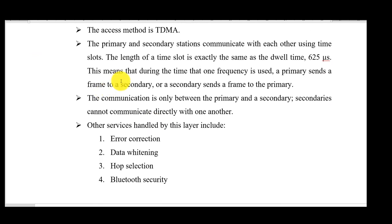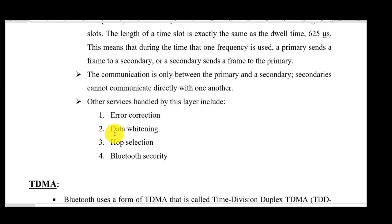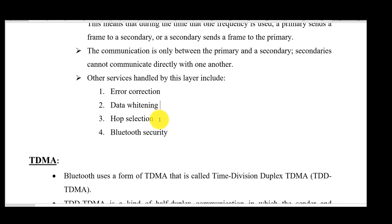Along with TDMA, the baseband layer is responsible for error correction, data whitening, and hop selection. Data whitening is a security method where data is scrambled randomly so that even if someone accesses it, they cannot rearrange it. Hop selection refers to frequency selection used in FHSS. The baseband layer is also responsible for overall Bluetooth security.